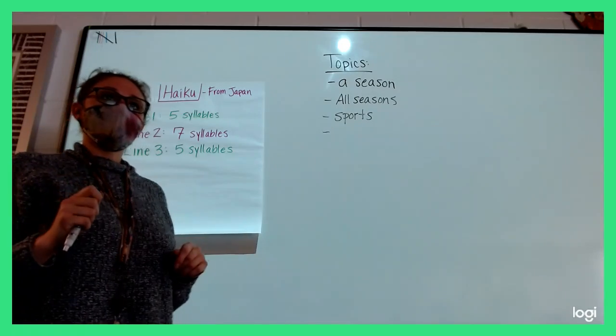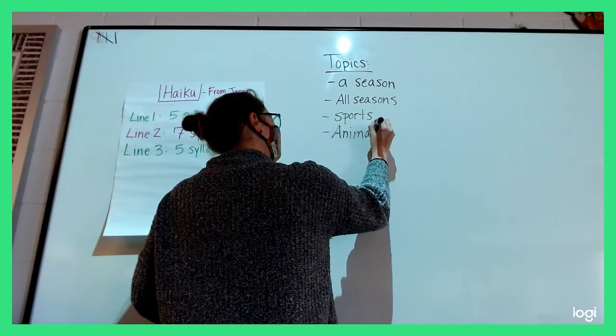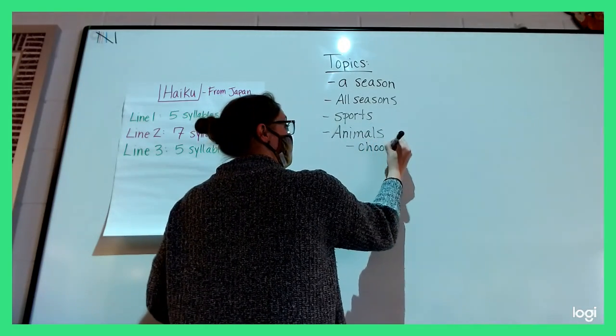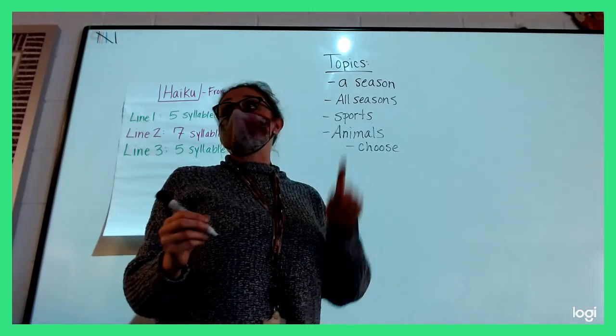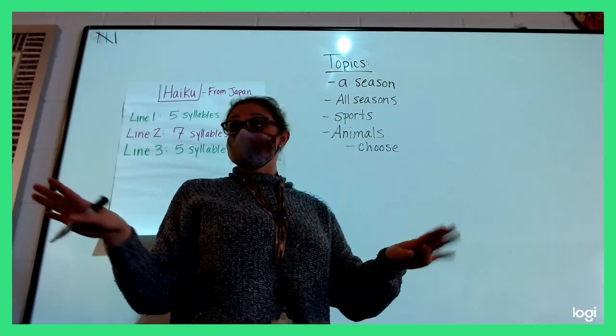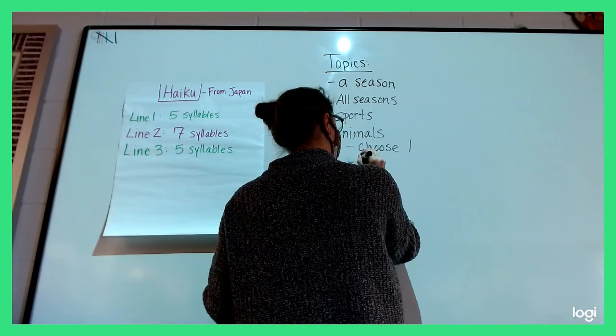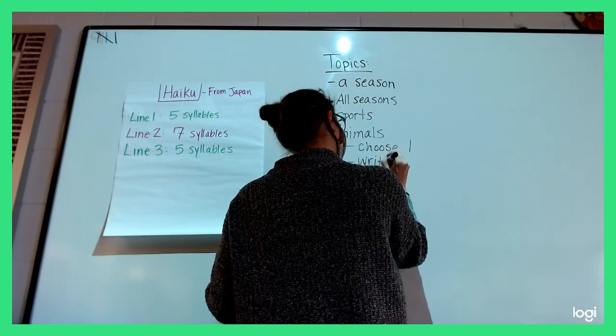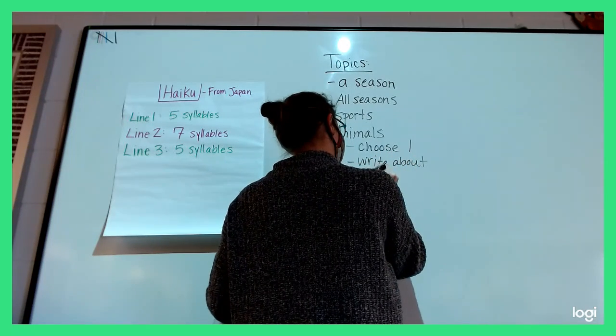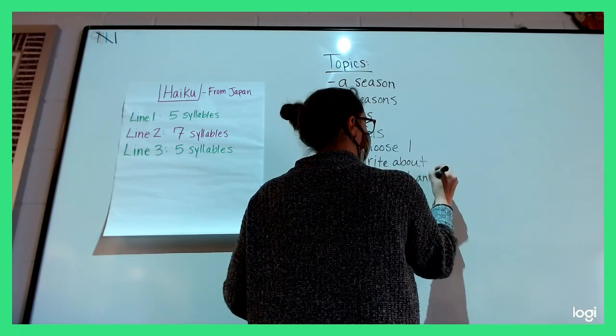Chloe? Penguin. Okay, so like animals. All right, and I'll say under there, you could choose one animal. If you know a lot about an animal and want to write four or five poems about one animal, which some of you in here are definitely obsessed with one animal, you could do that. So you could choose one, or you could write about different animals.